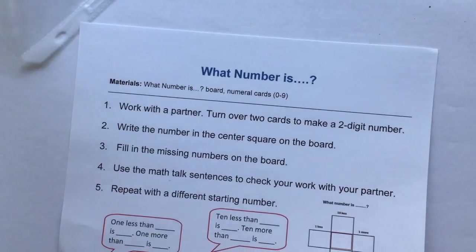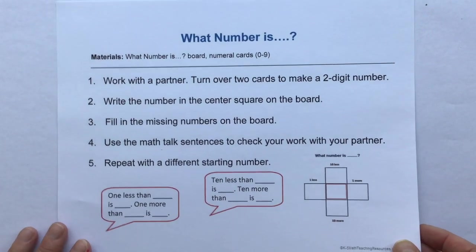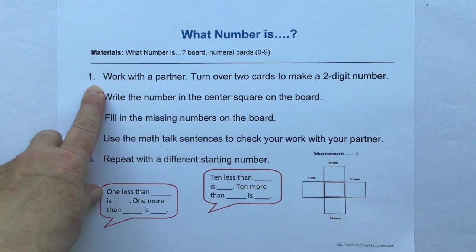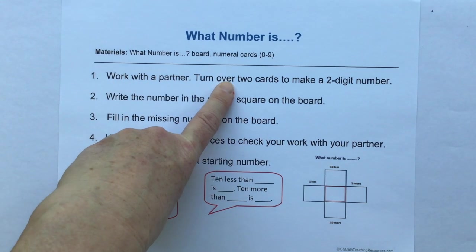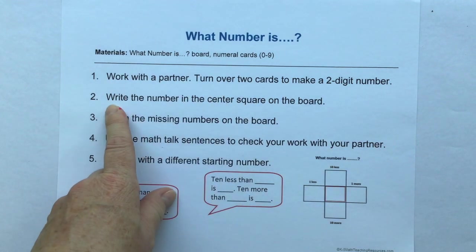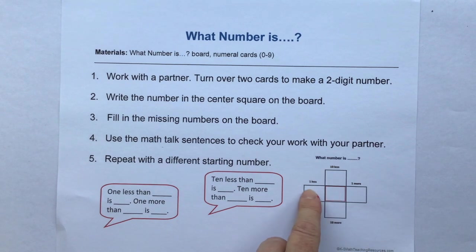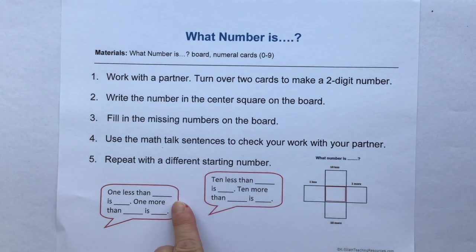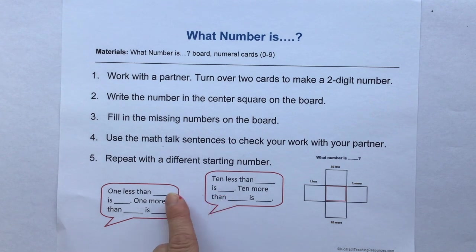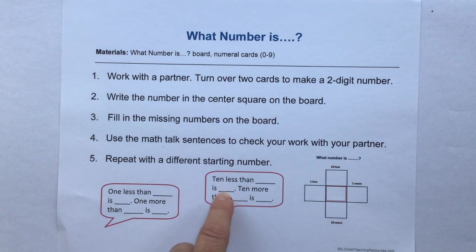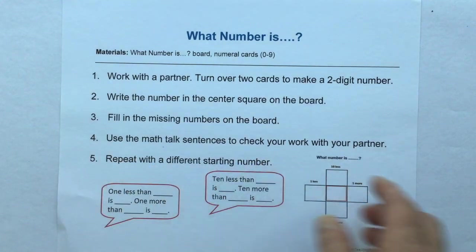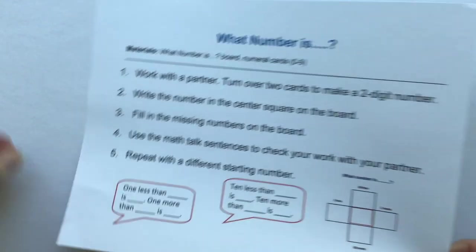Okay. Today, we are going to play a game called What Number Is. Here's the rules. You'll work with a partner to turn over two cards and make a two-digit number. We're going to write that number in the center square of our game board. Then, using your brain or using your hundreds chart, we're going to fill in the missing numbers on the board. Then turn and talk and say these sentences to your partner.